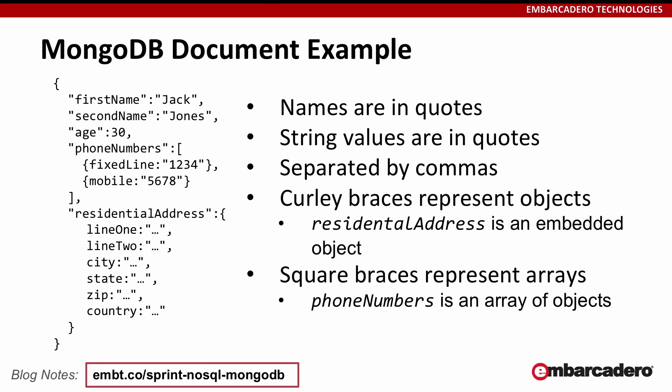So what exactly is a MongoDB document? Here's an example. This is in JSON — there are some subtle variations between JSON and BSON besides the fact that internally MongoDB stores BSON in binary format instead of a text representation. The names are in quotes, string values are in quotes, numerical values are not, and everything's separated by commas. The square braces for phone numbers represent an array containing additional embedded objects. Residential address is an embedded object; fixed line, mobile, etc., are all embedded objects within the parent record. So this is more unstructured and more dynamic than you'd typically see in an RDBMS.